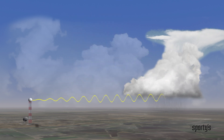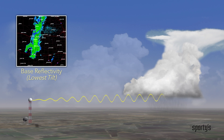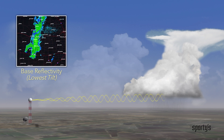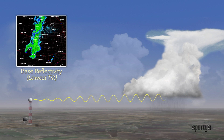But lowest tilt, also called base reflectivity, can also be useful. This uses only the lowest scan angle from the radar, so it offers a better representation of what precipitation is actually coming out of the bottom of a cloud. This can be helpful for takeoff and landing.